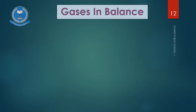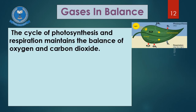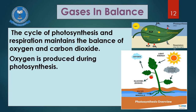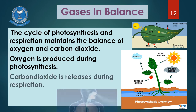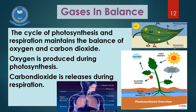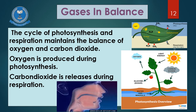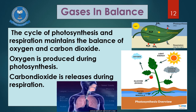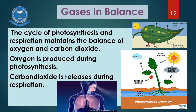Gases in balance. The cycle of photosynthesis and respiration maintains the balance of oxygen and carbon dioxide. Photosynthesis aur respiration yeh do aise processes hain jinki wajah se oxygen aur carbon dioxide hamare atmosphere mein balanced hain. Oxygen is produced during photosynthesis; carbon dioxide is released during respiration. Plants release oxygen which humans and animals use for respiration, and the carbon dioxide produced during respiration is used by plants for photosynthesis. Is tarah se yeh dono gases hamare atmosphere mein balanced rehti hain.